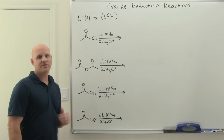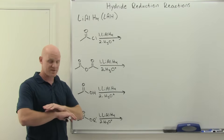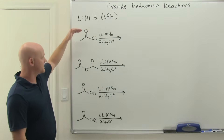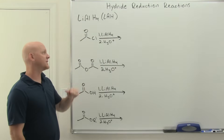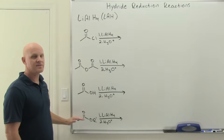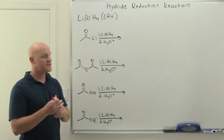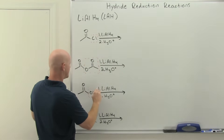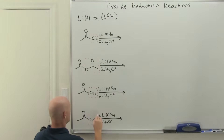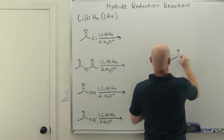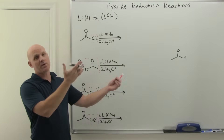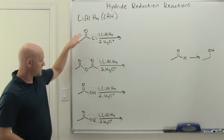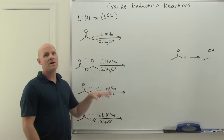Lithium aluminum hydride reacts with pretty much every carboxylic acid derivative. For these first four most reactive functional groups — acid chloride, acid anhydride, carboxylic acid, and ester — every one is going to undergo nucleophilic substitution first, replacing a different leaving group in each case with a hydrogen, initially forming an aldehyde. But lithium aluminum hydride will then react with that aldehyde as well, further converting it into a primary alcohol. There's not a good way to stop it halfway when using lithium aluminum hydride.